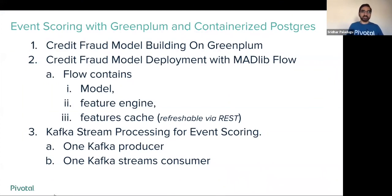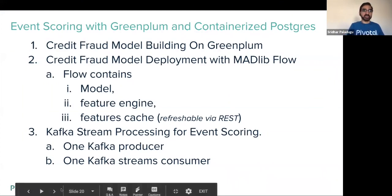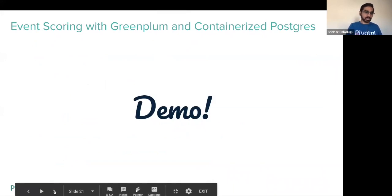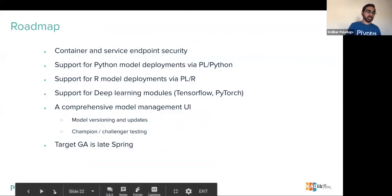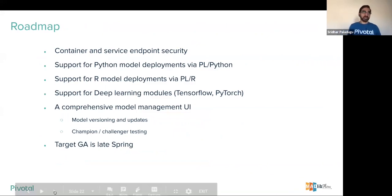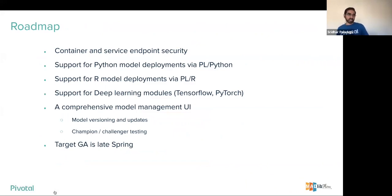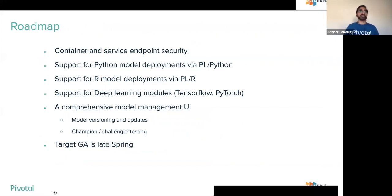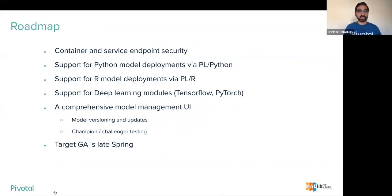The demo used one Kafka producer, one consumer, and three different containers. MATLAB Flow is planned to go live and is in the process of being made open source ready, with active work happening daily. The target release is late spring or early summer.